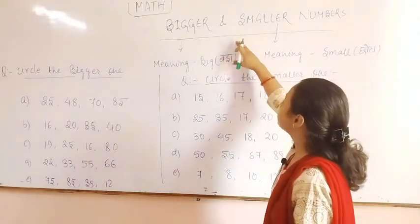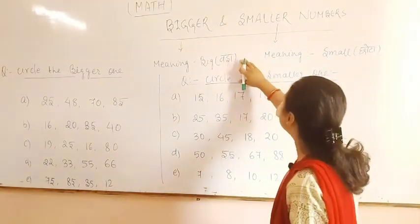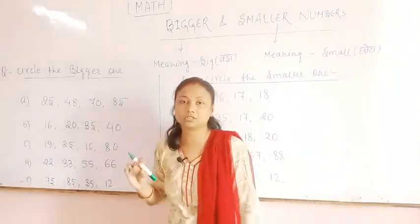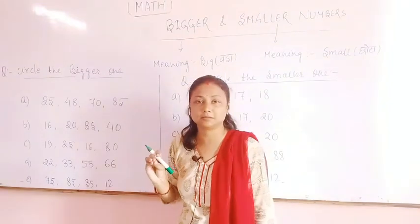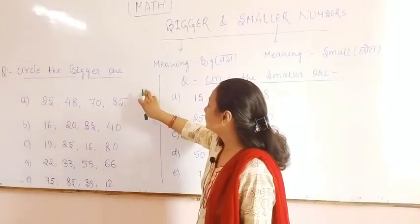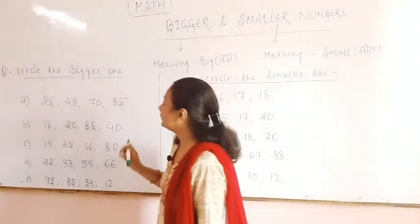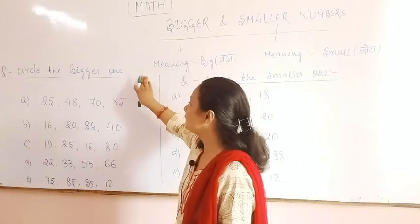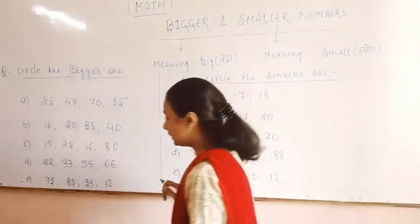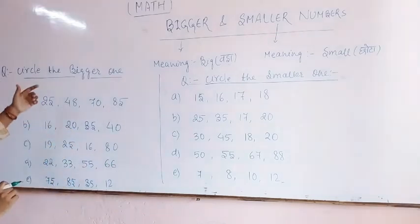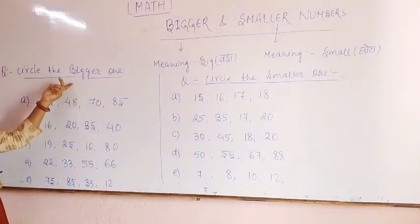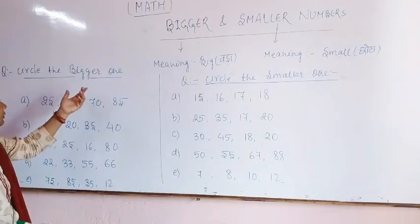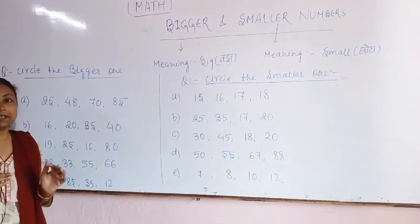So we all know about different types of tables. Firstly we will solve different types of questions related to bigger and smaller numbers. The first type of question is: circle the bigger one.